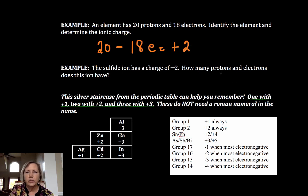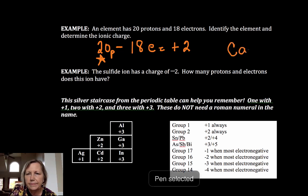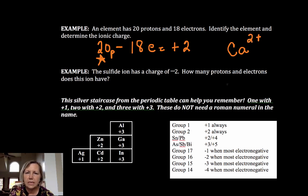And so I have to look at the element that has 20 protons, because remember it's the protons that define my element. And element 20 is calcium. So I'm going to write calcium 20. You don't have to do that. It didn't ask you. It just said identify the element and determine the charge. So it has a 2 plus charge. I don't know the mass number so I'm not going to do a whole nuclear symbol.